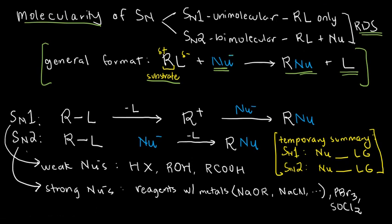Specifically, in SN reactions, we have two types, SN1 and SN2. For SN1, the meaning of the number 1 there is unimolecular, meaning that out of our two reactants, the RL and the Nu, only one of them participated in the rate-determining step, our RL. But in SN2, 2 here stands for bimolecular. We need to see the step-by-step process, of course.